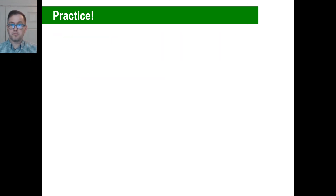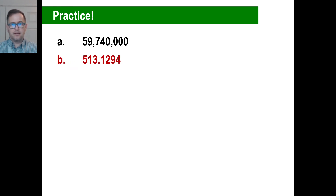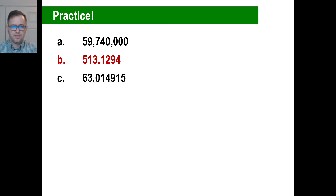Let's go ahead and take a look at your practice problems. Try A — since you're rounding to the nearest 10,000, the answer would be 59,740,000. Try B — pause it and try B. B is 513 and 1,294 ten-thousandths. Pause it and try C. There is your C: 63 and 14,915 millionths.